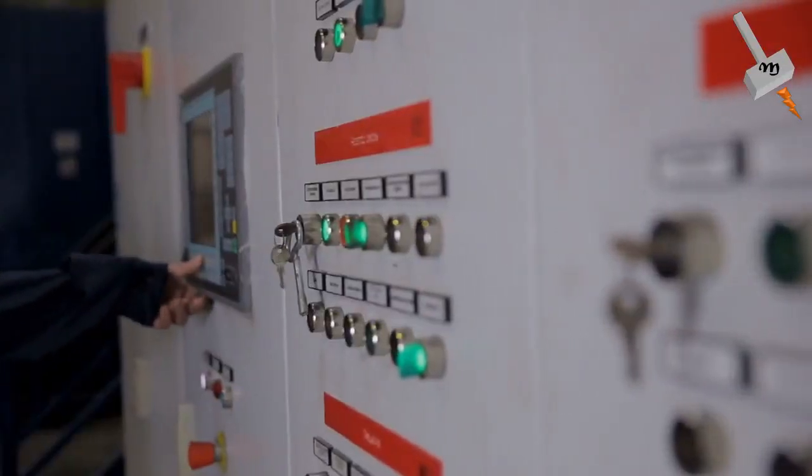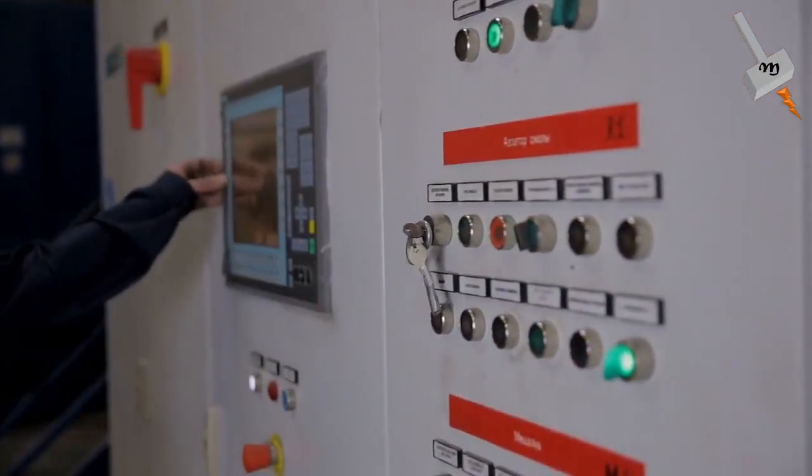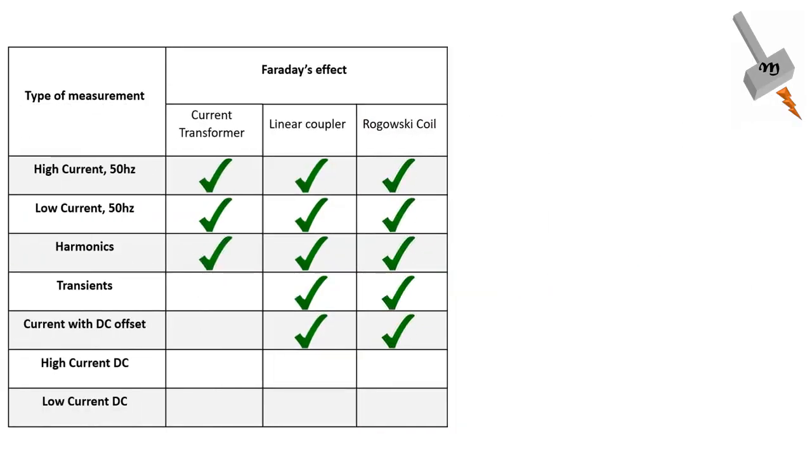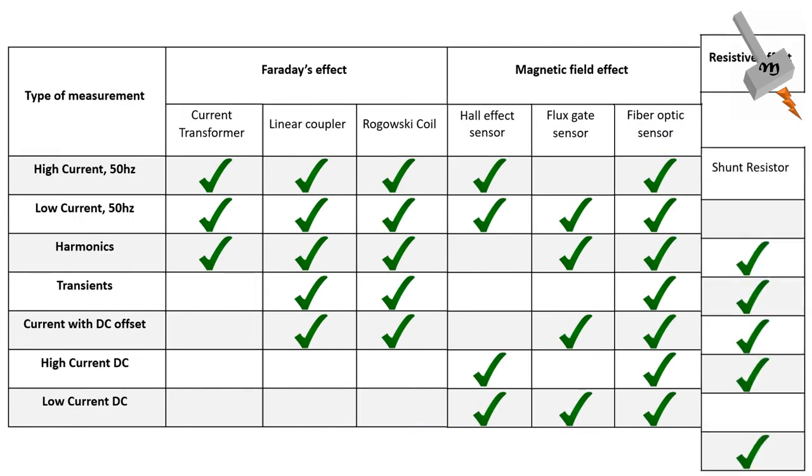Different situations call for different techniques to be adopted for current measurement, like sensing based on Faraday's effect, sensing based on magnetic field effect, and sensing based on simple resistive effect.